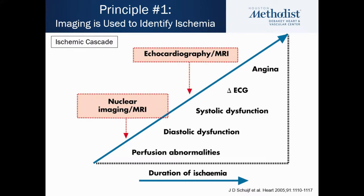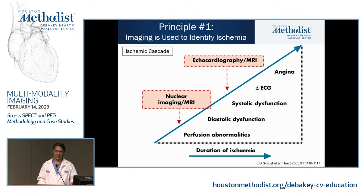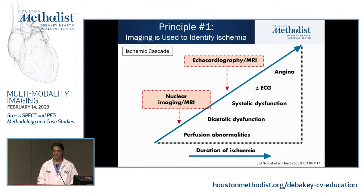Everybody knows the ischemic cascade. Once you have ischemia or a perfusion abnormality, this is followed by diastolic dysfunction, then systolic dysfunction, EKG changes, and finally the last thing to present is angina. We use different imaging modalities to image portions of the ischemic cascade. For nuclear imaging, it's a very sensitive technique because it detects the very first abnormality that happens with ischemia — perfusion abnormalities — that's what we're looking for.